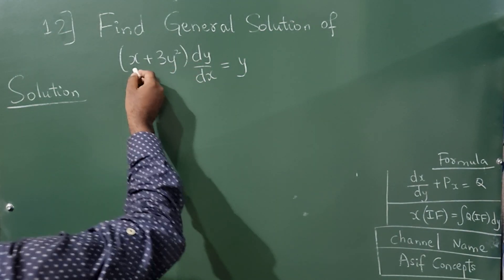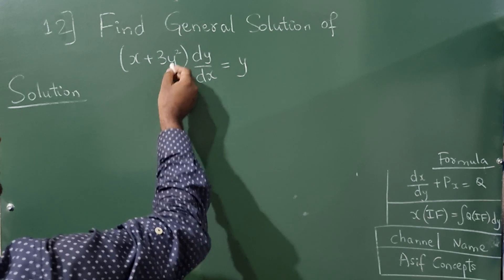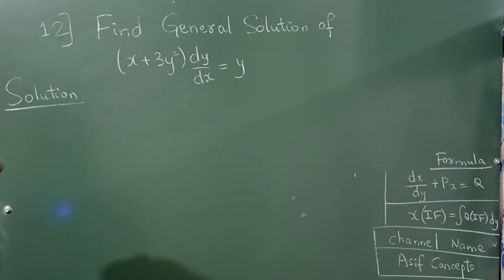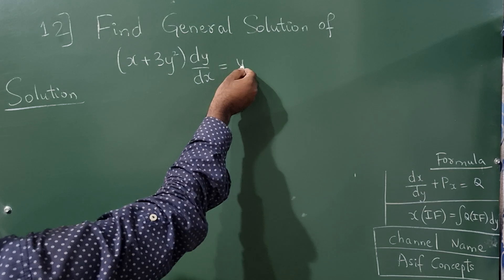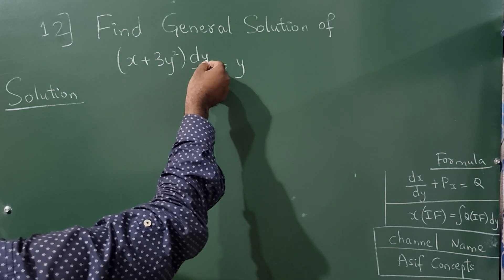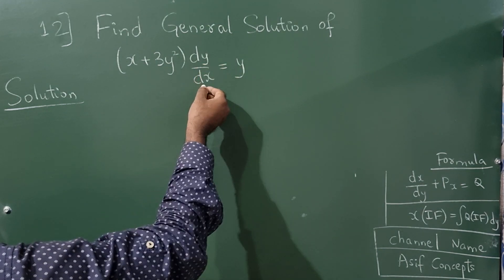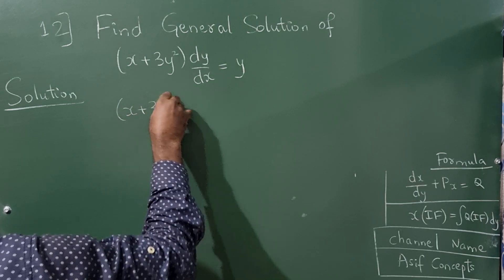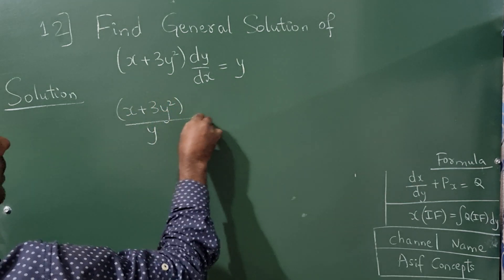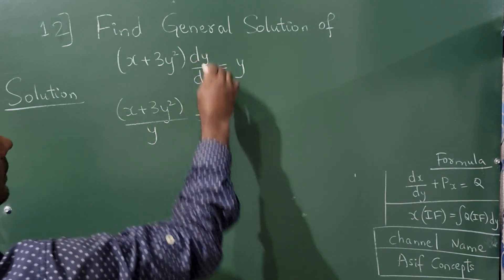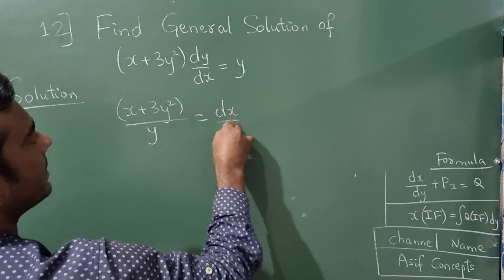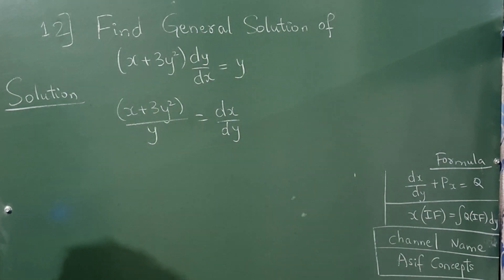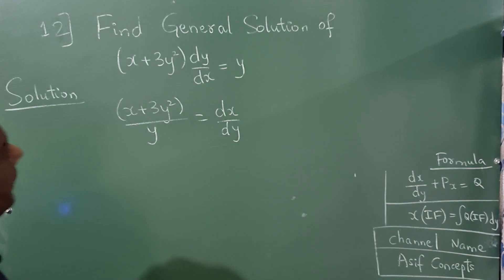Find the general solution of (x + 3) y² dy/dx = y. Take the y term on the left-hand side and dy/dx on the right-hand side, so (x + 3) y² divided by y — I have taken this on the left-hand side. This will become dx/dy, so this entire term I have taken to the right-hand side.